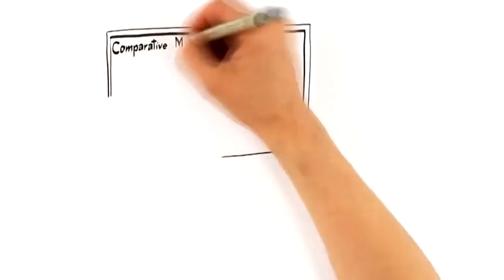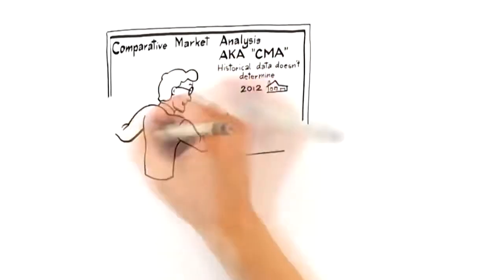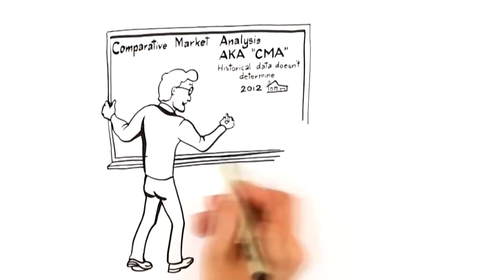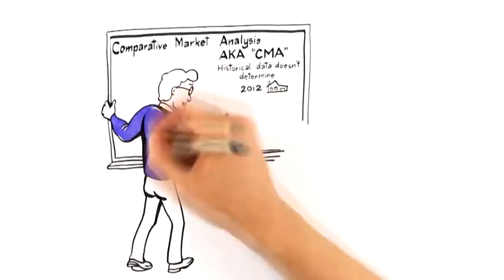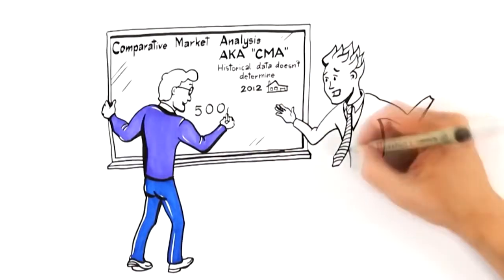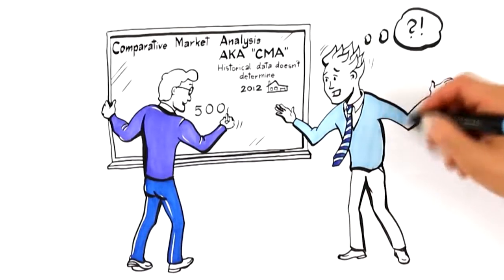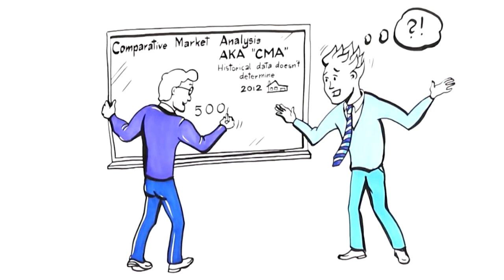So, let's start with number one, pricing expertise. Traditionally, agents price homes using what is called a comparative market analysis, also known as a CMA. This establishes the value of your home by comparing it to historical sales. What most agents don't realize is that historical data doesn't determine how you should position your home in today's market to attract the highest offer. This would be like driving your car while looking in the rearview mirror.